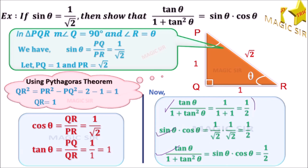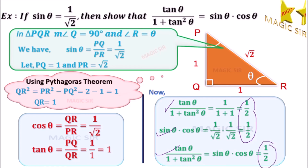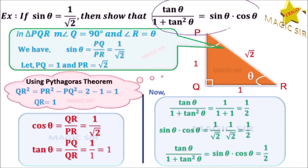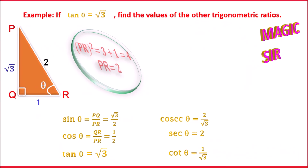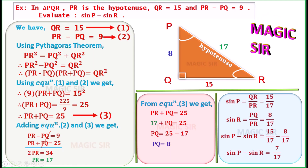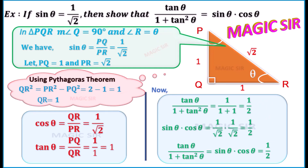Friends, in the next video we will find the values of trigonometric ratios for the angles 0 degrees, 30 degrees, 45 degrees, 60 degrees, and 90 degrees. You can take screenshots of these three examples. I will see you in the next video.